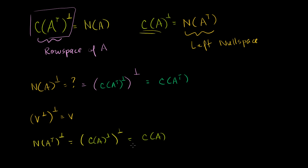So we now see some nice symmetry. The null space is the orthogonal complement of the row space, and the row space is the orthogonal complement of the null space. Similarly, the left null space is the orthogonal complement of the column space, and the column space is the orthogonal complement of the left null space. So we have some nice symmetry that we're able to essentially prove, given what we saw in the last video.